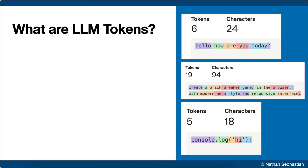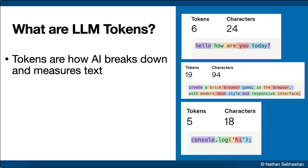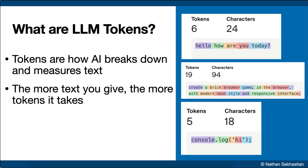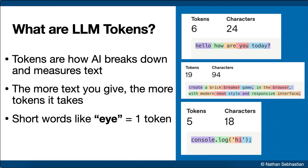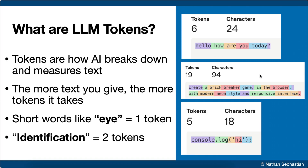The first term is tokens. In the world of AI, tokens are just a way of measuring text. Think of them like little chunks or building blocks that make up your words and prompts. For example, a short word like 'AI' will be one token, and a longer word like 'identification' will be split into two tokens. We have some examples of token calculations on the right side here. Short text like 'Hello, how are you today?' becomes six tokens, while a longer prompt for a Breakbreaker game is 19 tokens, and a simple console.log code becomes five tokens.